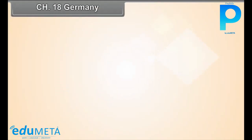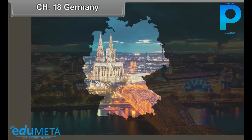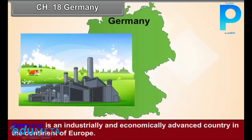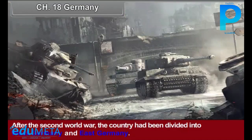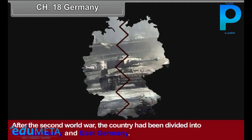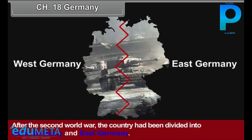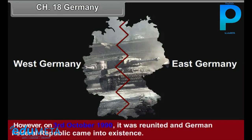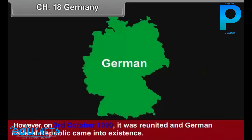Chapter 18: Germany. Germany is an industrially and economically advanced country in the continent of Europe. After the Second World War, the country had been divided into West Germany and East Germany. However, on 3rd October 1990, it was reunited and the German Federal Republic came into existence.